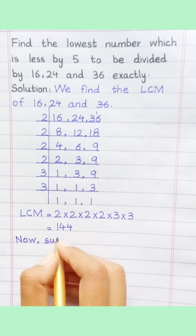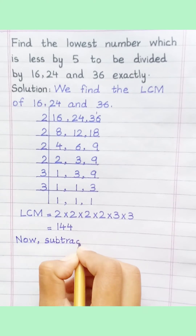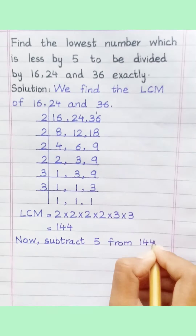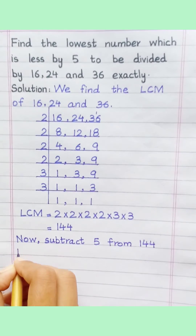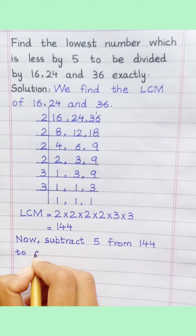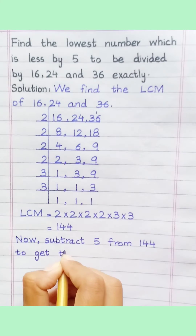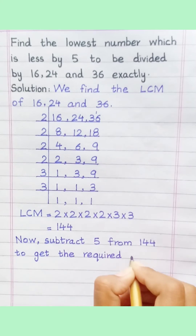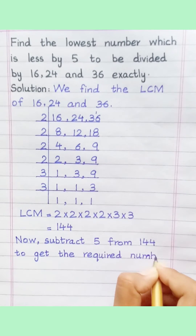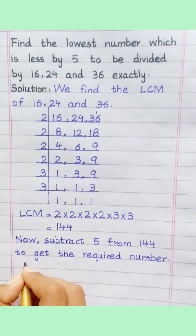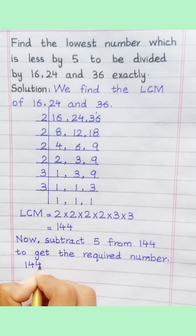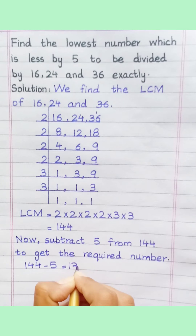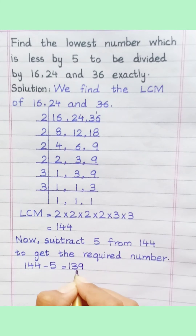Now subtract 5 from 144 to get the required number. 144 minus 5 equals 139.